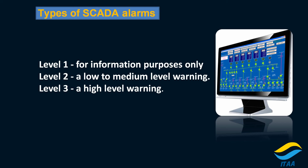Level two warns the operator that something is going to happen. For level three, we have a high level warning that indicates a very serious problem has occurred which needs immediate action from the operator. For example, this could be a boiler where the pressure is getting too high — as an operator, you have to understand the situation and take immediate action to sort out that issue.